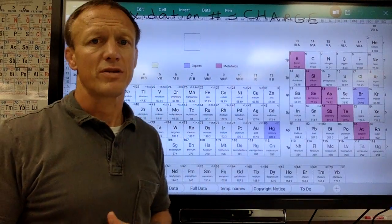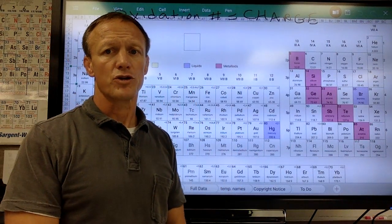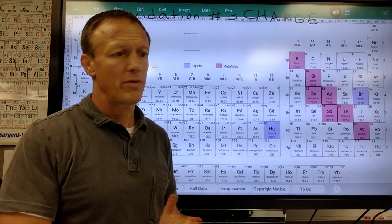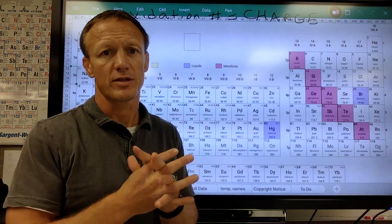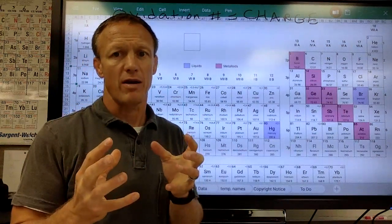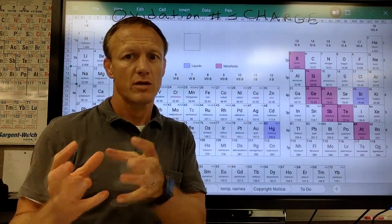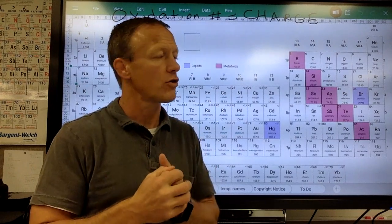This video is on what's called the oxidation number of an element or the charge of an element. Probably one of the most important things actually of the year because this determines how elements combine. For example, like two hydrogens combined with one oxygen to make water. So this is pretty important on why elements and how they form charges.